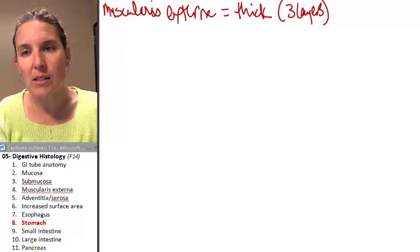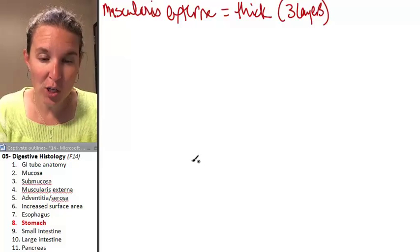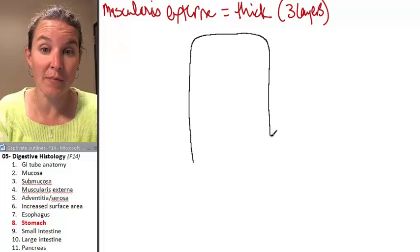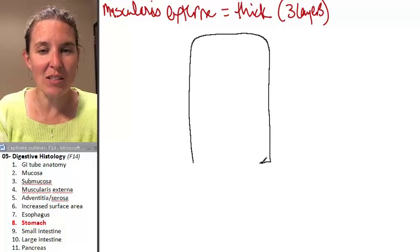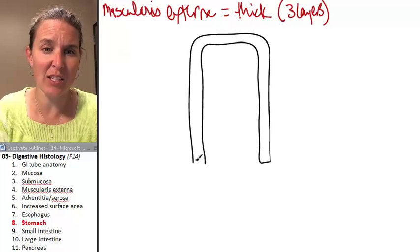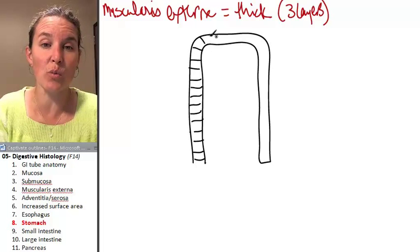The other thing that's interesting about the stomach is that you've got the simple columnar epithelium, and even though this looks like a villus, it is not. It's basically just an increase. The stomach has these folds called rugae.